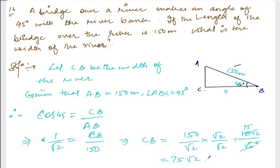So therefore the width of the river is 75 root 2 meters. That's all — simple, that's all. Thank you so much, I hope you understood. If anything is a problem or I have made any mistake, please do write in the comments below. Thank you so much, we will meet in the next video.